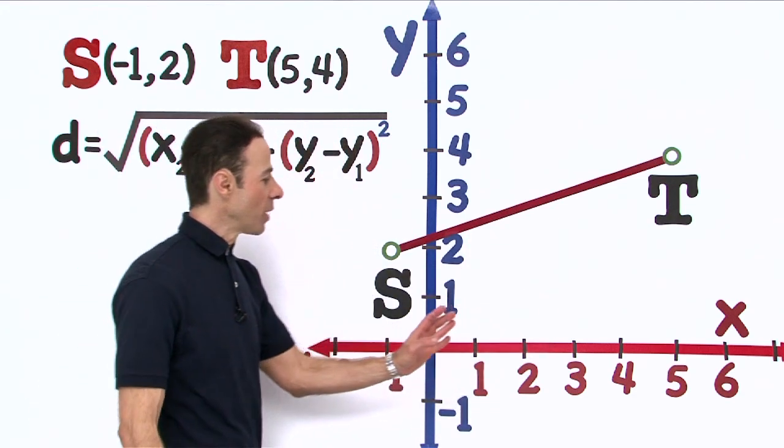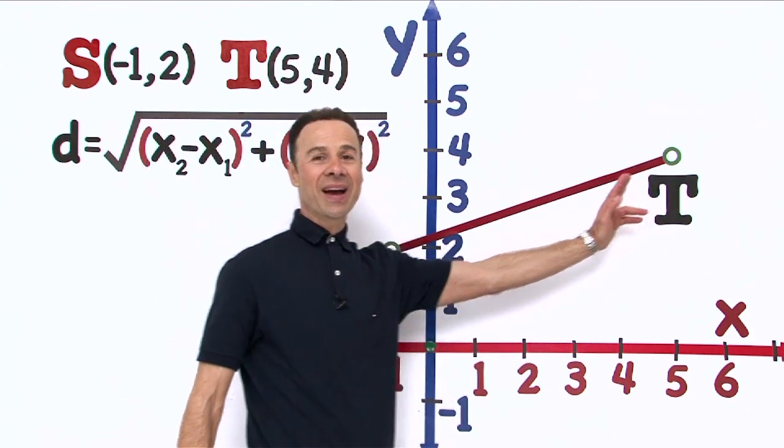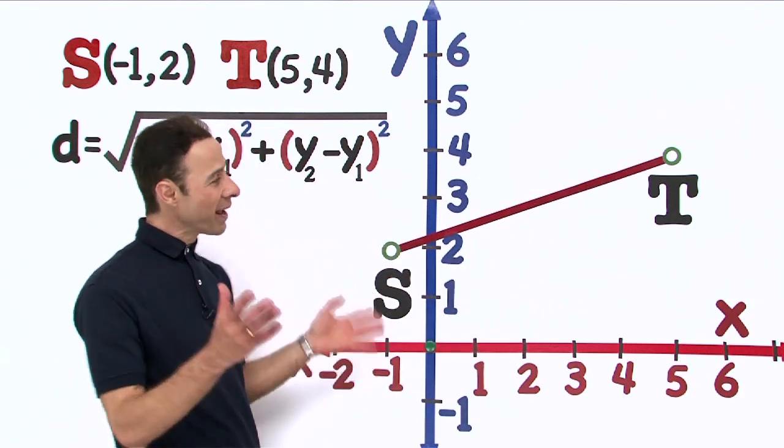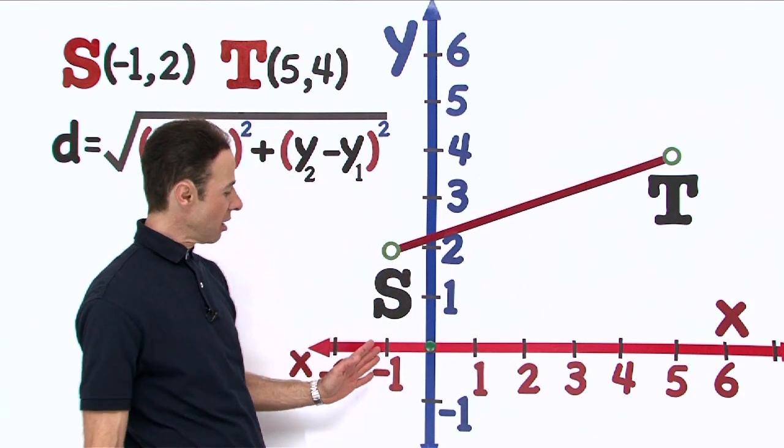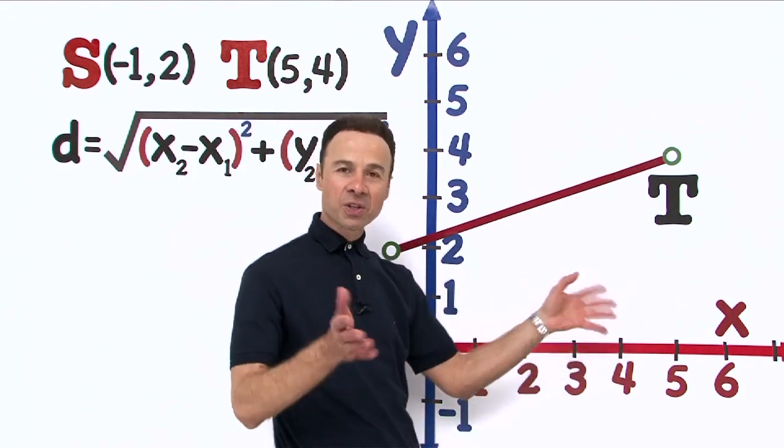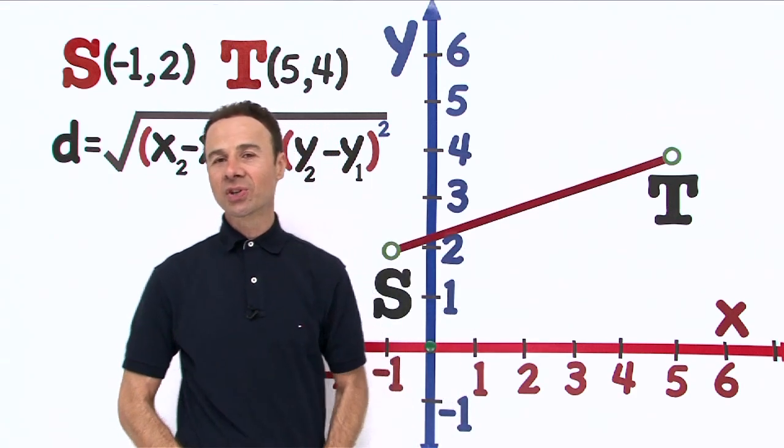We have the two coordinates, the first coordinate of S all the way across to point T. That is the distance we are looking for. It is a short distance and we can kind of estimate just by looking at it—about 1, 2, 3, 4, 5, approximately 6 units in distance—but we want to get an accurate and precise answer.